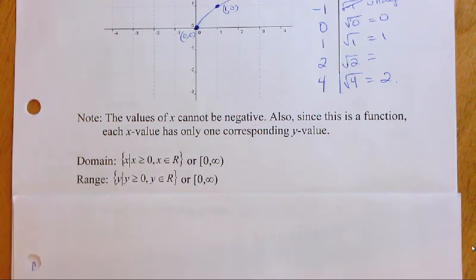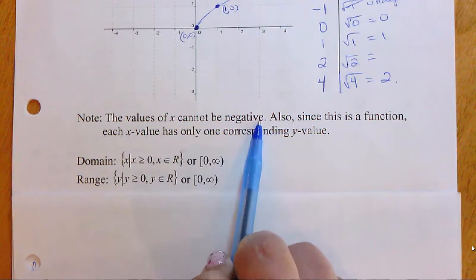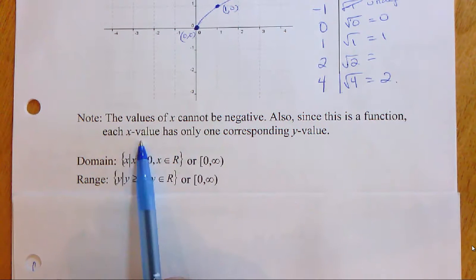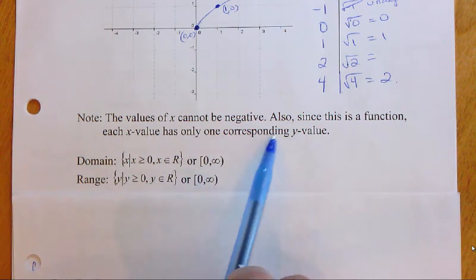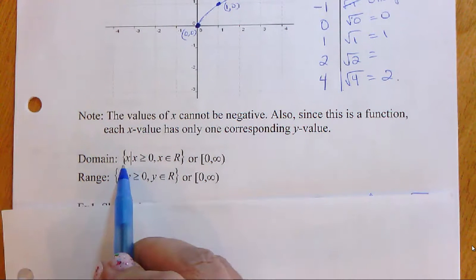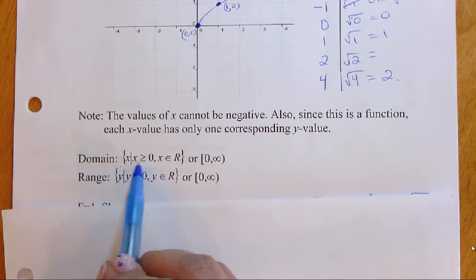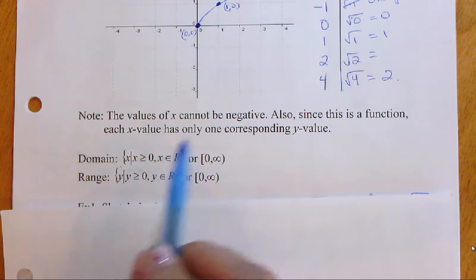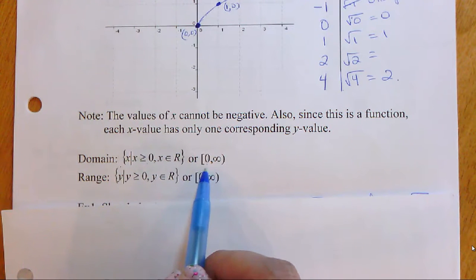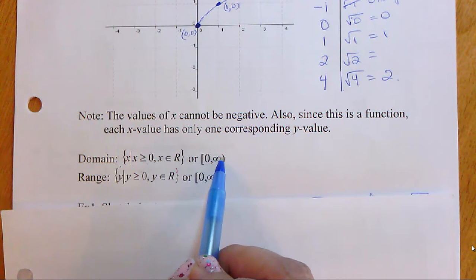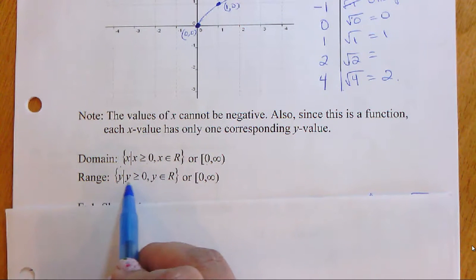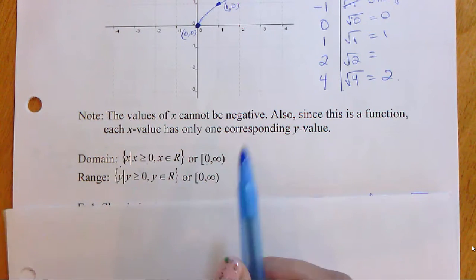The values of x cannot be negative. Also, since it's a function, each x value has only one corresponding y value. This gives us our domain and range. The domain is x is greater than or equal to zero — or in interval notation: square bracket, zero comma infinity, round bracket. And the range is y is greater than or equal to zero.